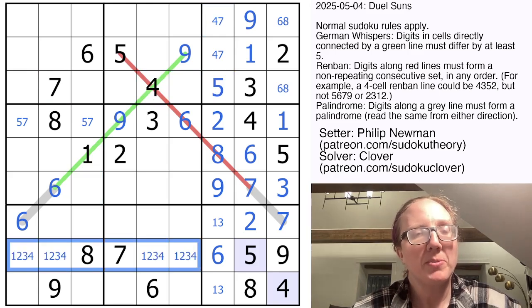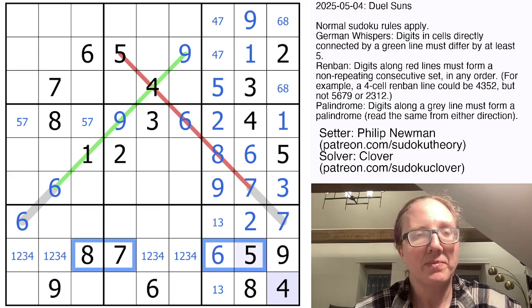We need one, two, three, and four because we have all of our high digits, five, six, seven, eight, nine. This can't be a three or four because those are already there.